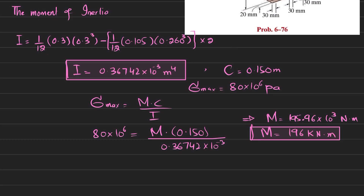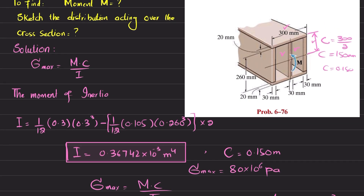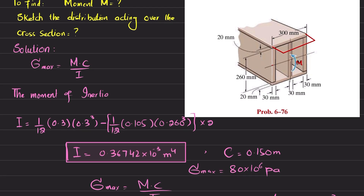Now let's sketch the stress distribution. With moment M = 196 kN·m applied, the maximum bending stress occurs at the top fiber. We join the stress values, and at the neutral axis the bending stress is zero. Similarly, at the bottom fiber there is a maximum stress as well.